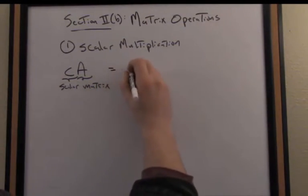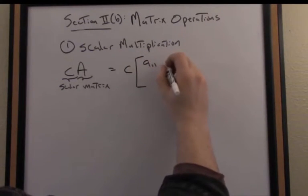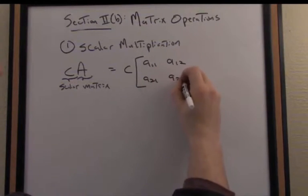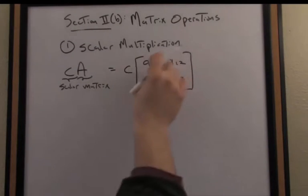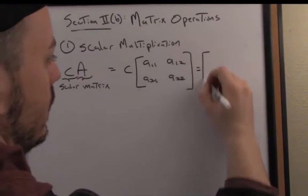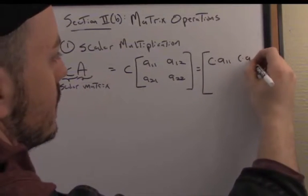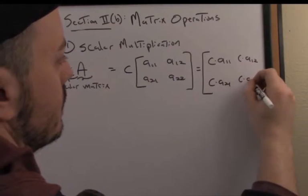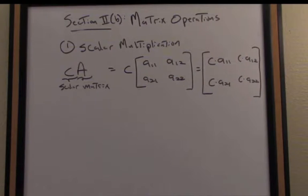To write out the algebraic definition, let's say just for a simple 2x2 matrix. We have A11, A12 are the entries, A21, A22. What do I do when I perform scalar multiplication? I distribute the scalar across each of the components, so that's going to result in this matrix: C times A11, C times A12, C times A21, and C times A22. So there is the algebraic definition of scalar multiplication.